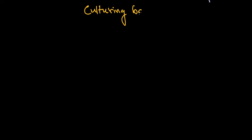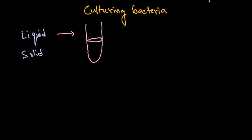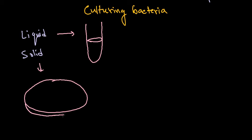We are talking about culturing bacteria. Whether it is liquid or solid media, both contain a general nutrient source. For liquid media, we use a culture tube with a slightly larger diameter than normal test tubes. For solid media, we use petri plates — petri dishes — and the media components are contained in both.